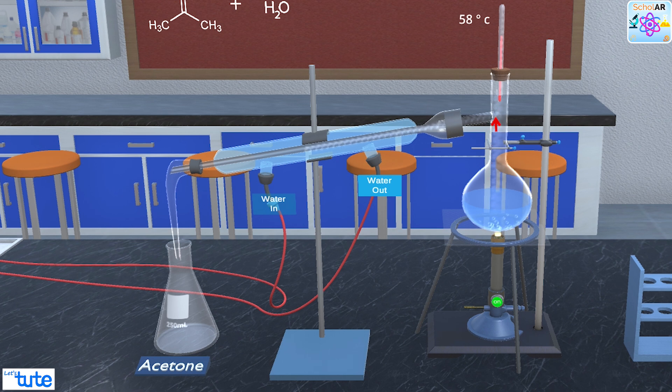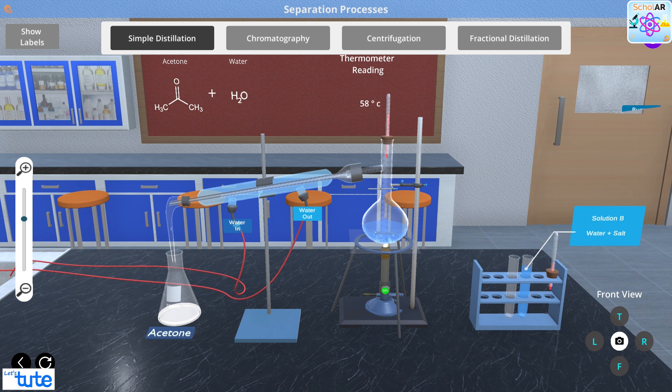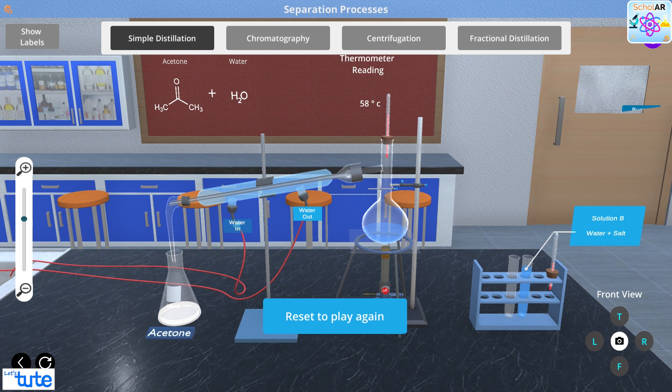Now these vapors travel from the water condenser, which cools the vapors down and converts it back into liquid acetone form, which gets collected in the conical flask as we can see. Repeat the same process to obtain salt from the solution. Do try this by yourself using the Scholar app and let us know.